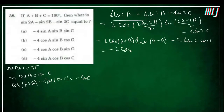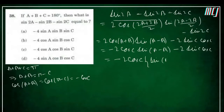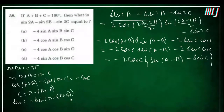Substituting: −2cosC·sin(A−B) − 2sinC·cosC. And since C = π − (A+B), sinC = sin(A+B). So the expression becomes −2cosC·[sin(A−B) − sin(A+B)].